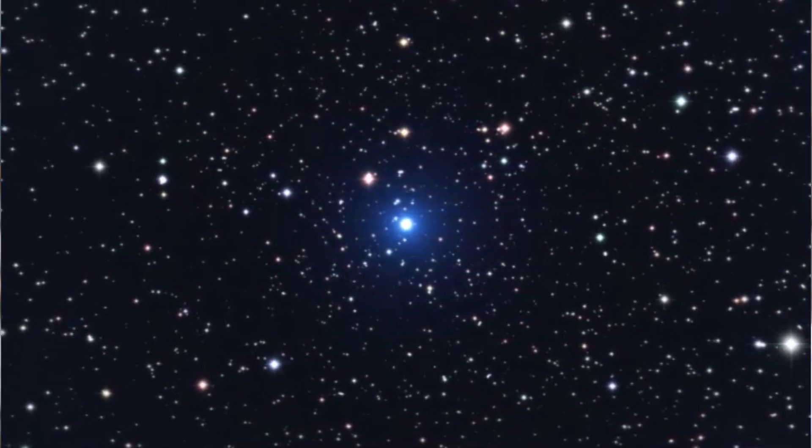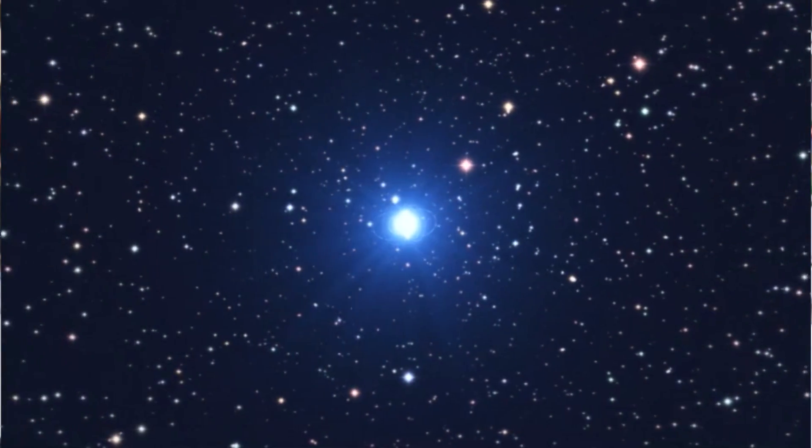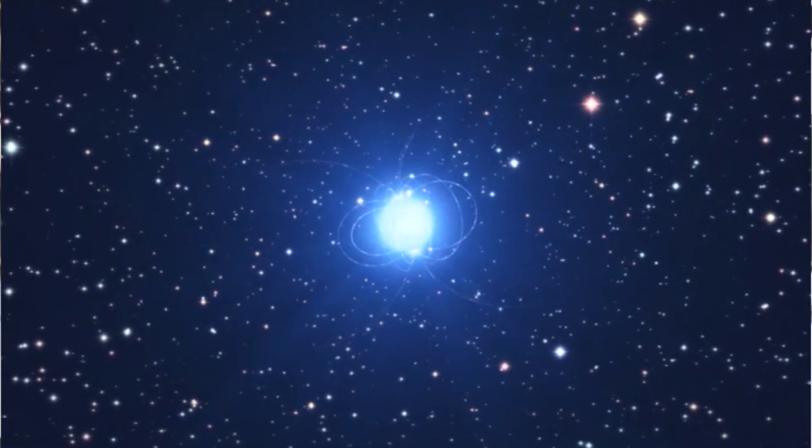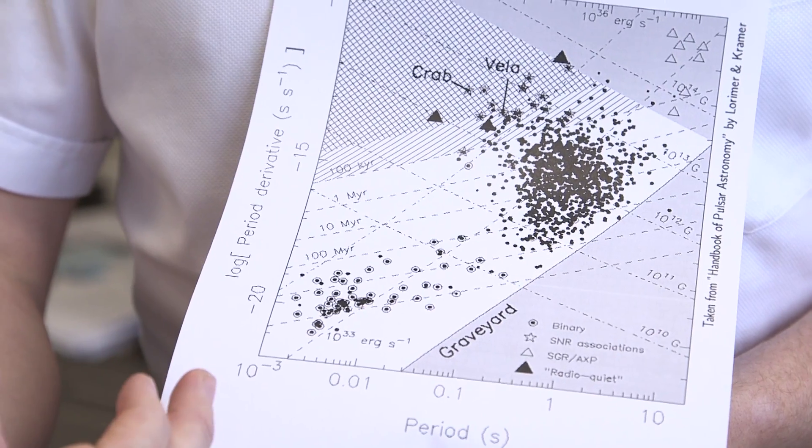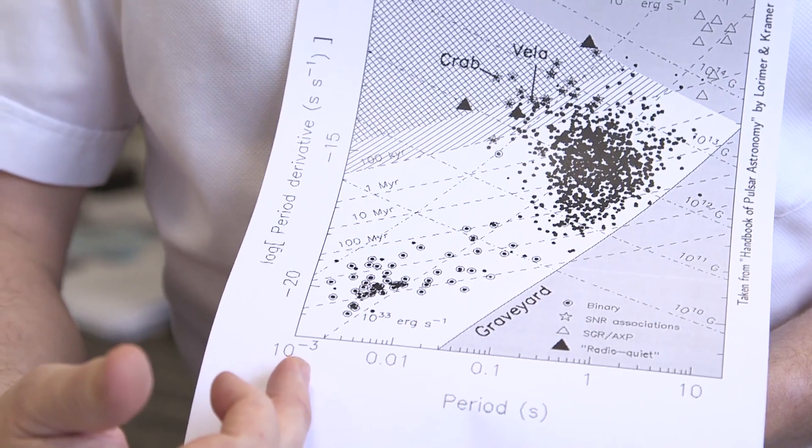Magnetars have crazily strong magnetic fields. And so the way that radio astronomers kind of show properties of pulsars is through what's called a P-P-dot diagram. And so I'm going to show you a P-P-dot diagram. On the x-axis, it's a rotational period.